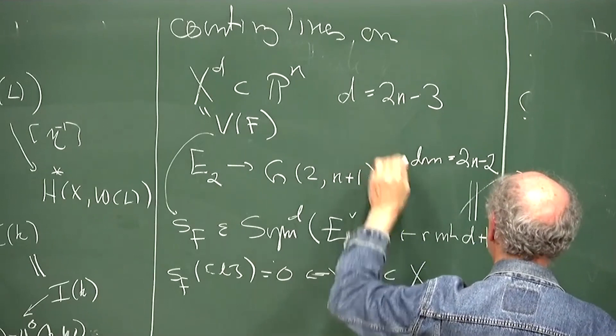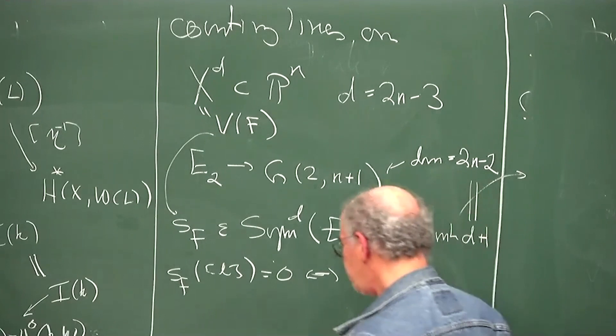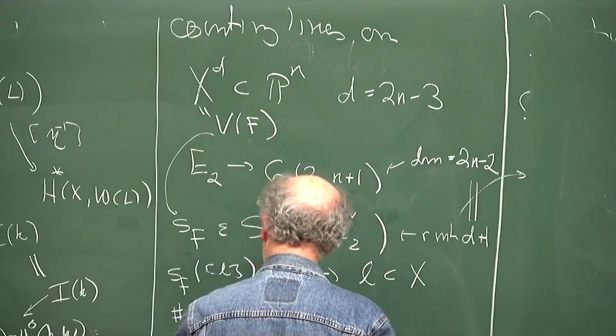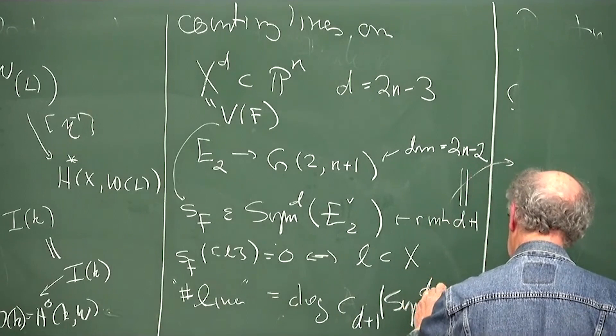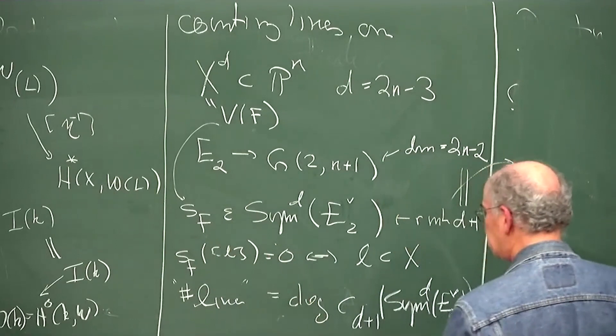If this bundle has rank d+1 — there are d+1 symmetric forms of degree d in two variables — and if d+1 equals the dimension of the Grassmannian, i.e. d equals 2n minus 3, you'd expect finitely many zeros of a general section. So the number of lines should equal the degree of the top Chern class of Sym^d(E_2^∨), because a section with finitely many zeros computes the top Chern class of a bundle, just as it would compute the Euler class.